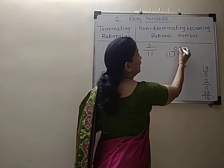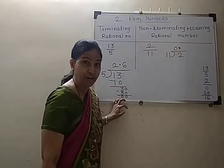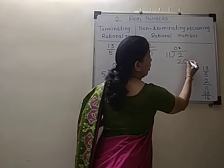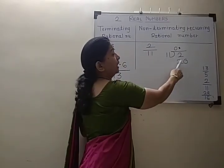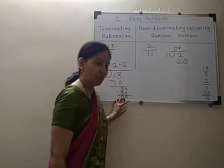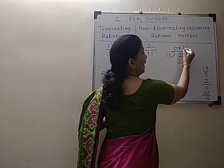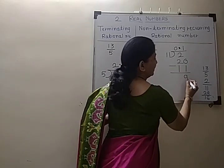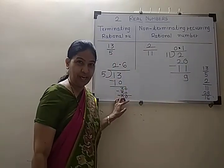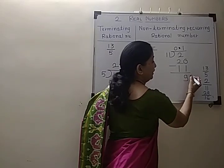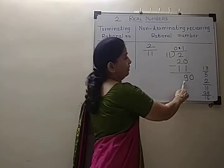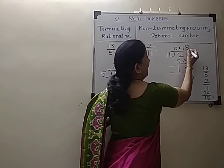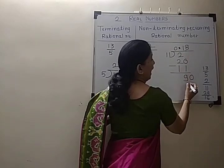So we give a decimal point and take a 0 on 2, making it 20. 11 goes once into 20, giving 11, and the remainder is 9. Again we take a 0, making it 90. 11 goes 8 times, giving 88, and the remainder is 2.